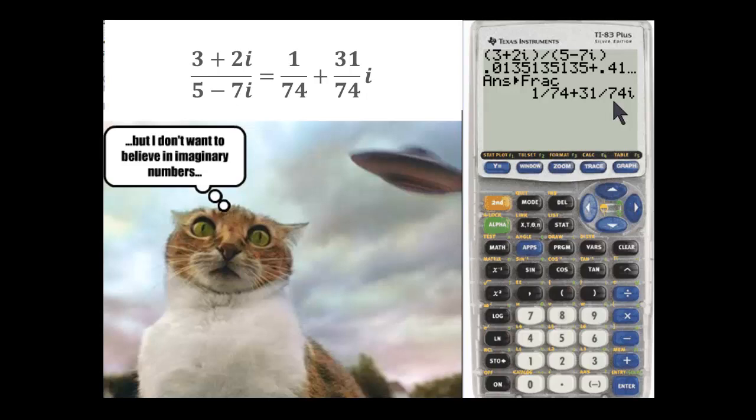And then i is out to the side, because the way you would read this with words would be 1/74 plus 31/74 times i.